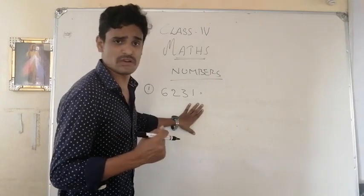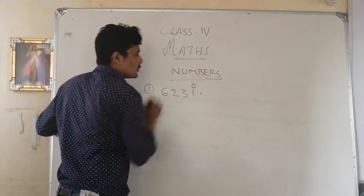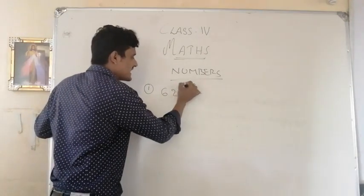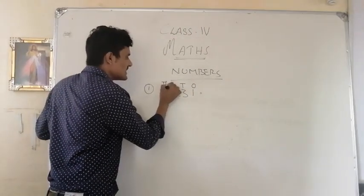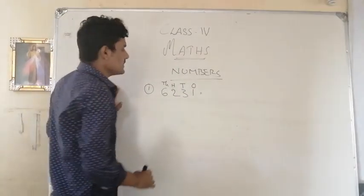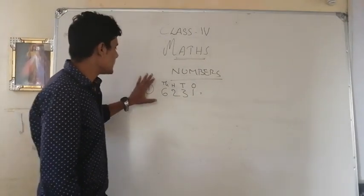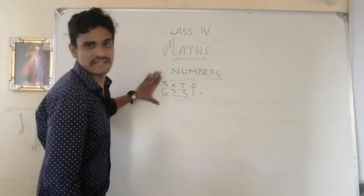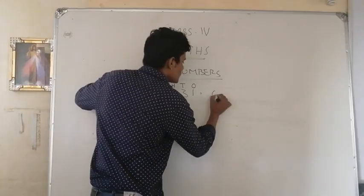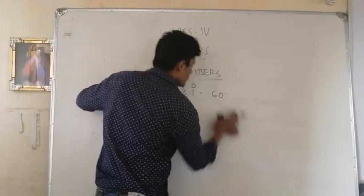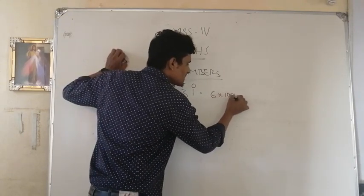How do we convert the place values of the numbers? Look at here — how do we arrange the place values of this number? This is the 1s place. This is the 10s place. This is the 100s place. This is the 1,000s place. So how do we convert these numbers into expanded form? It is very easy. What is the place value of each digit? 6 is in which place? The 1,000s place. Simply we can write: 6 is in the 1,000s place.